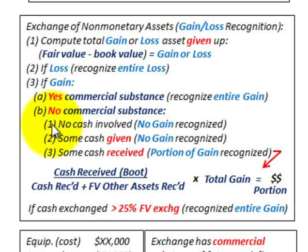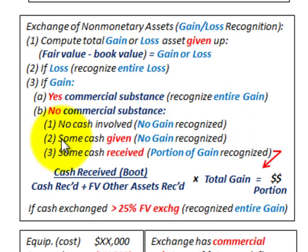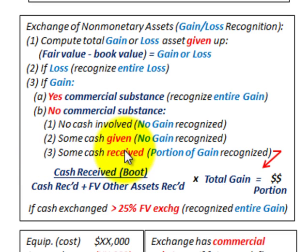For the three options under no commercial substance: number one, if no cash is involved, no gain is recognized. Number two, if some cash is given — that's the key word, given — no gain would be recognized. But number three, if some cash is received, then you have to determine the portion of the gain recognized.